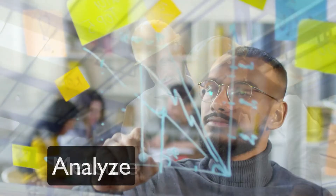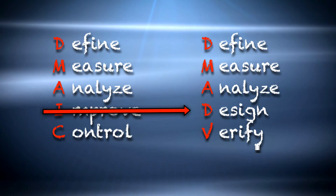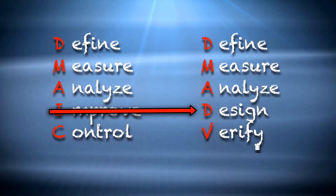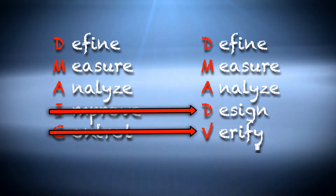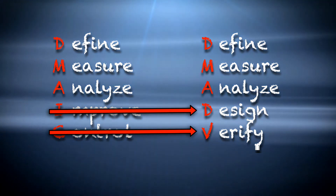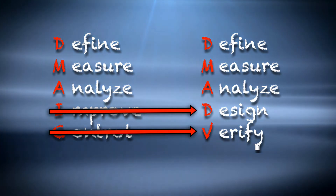The DMADV method only differs from the DMAIC method in the final two stages. The acronym represents each of the five stages: Define, Measure, Analyze, Design, and Verify. 'Improve' is replaced with 'Design' to suggest that you design the best possible process. Additionally, the 'Control' stage is replaced with 'Verify' to indicate that the user should verify that the process they designed functions appropriately.